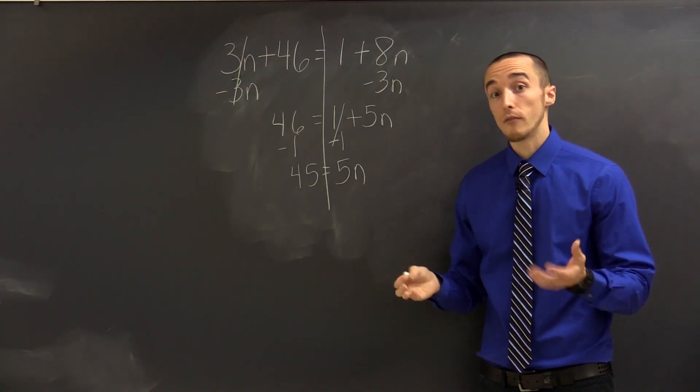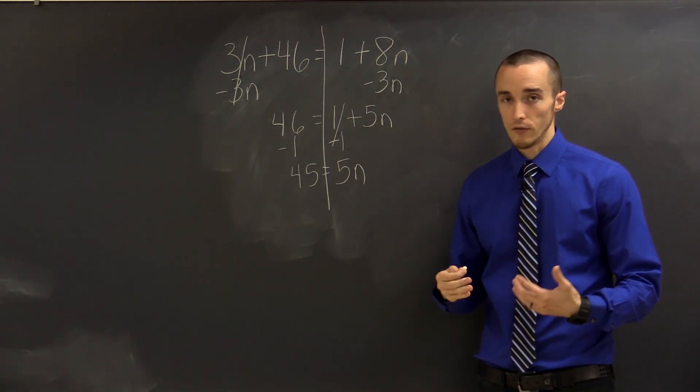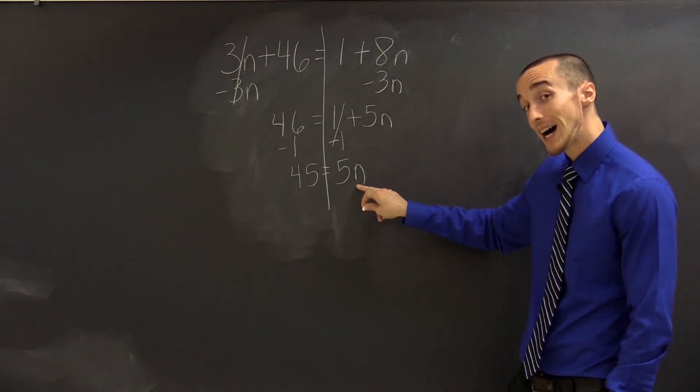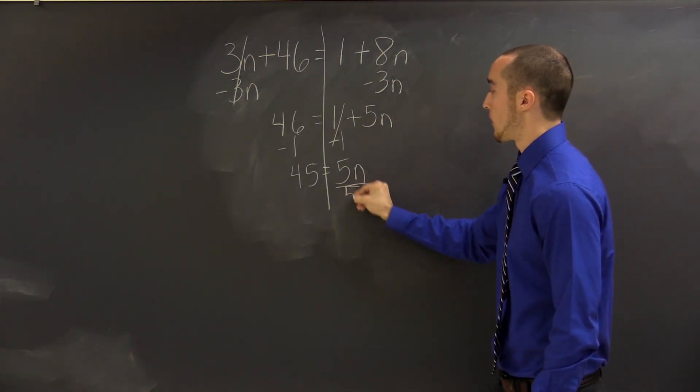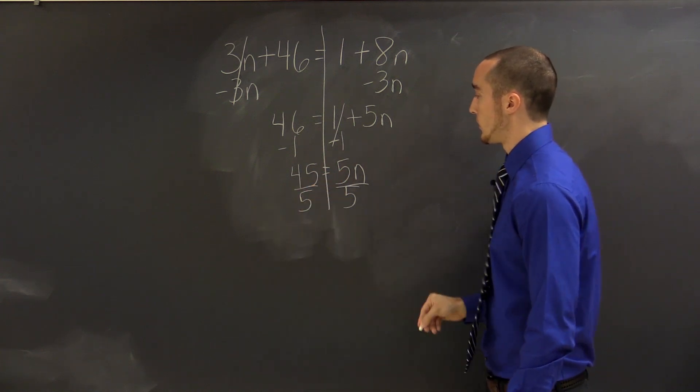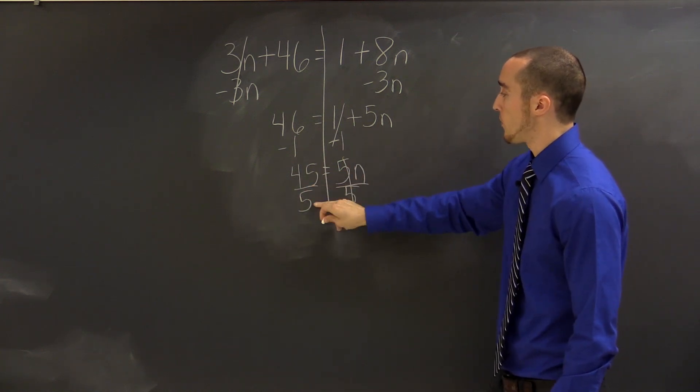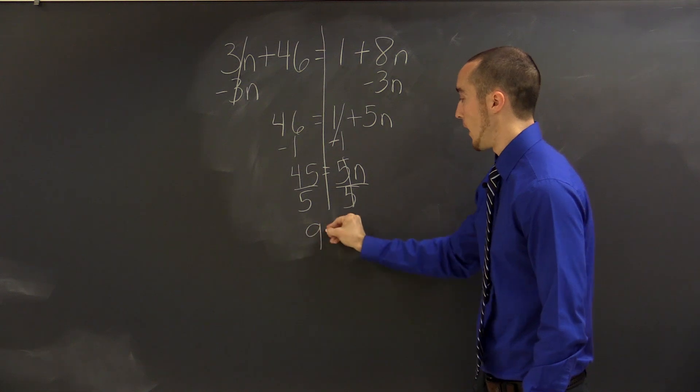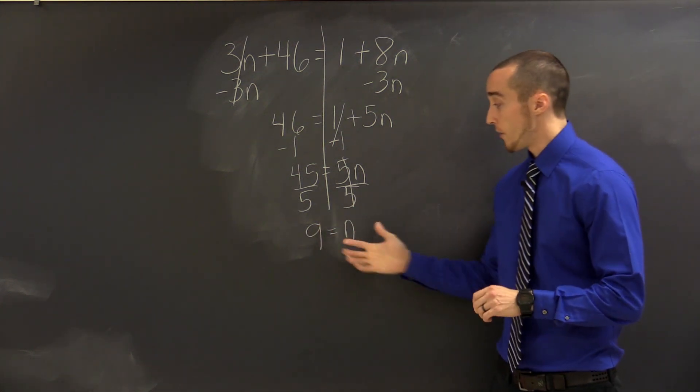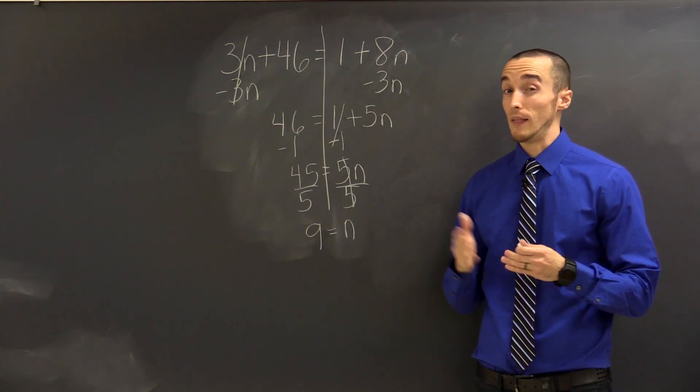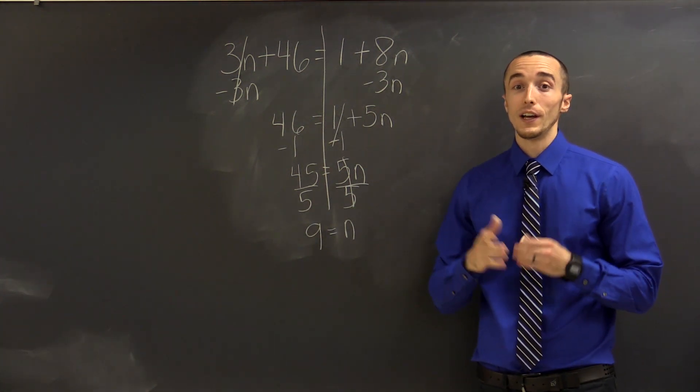Okay. So to finish this off, all we have to do is use inverse operations. This is 5 times n. The inverse would be division. And so we're going to divide by our coefficient, which is 5. So let's see what that gives us. 45 divided by 5 is 9. And we finally have n by itself. So the final answer is n equals 9. And that is a little bit about how to solve equations with variables on both sides.